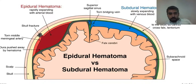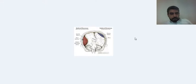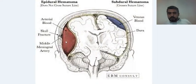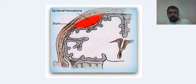Now let's apply that on real cases and see how to differentiate between these two. This diagram shows that venous blood causes subdural hematoma while arterial blood causes epidural hematoma. Another diagram shows the origin of epidural hematoma — blood accumulating between the bone and the dura matter.